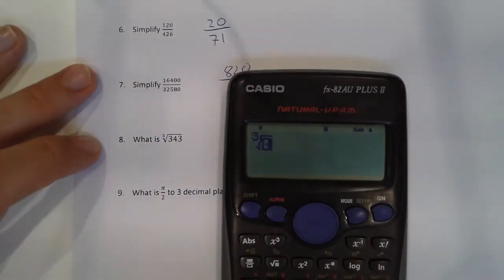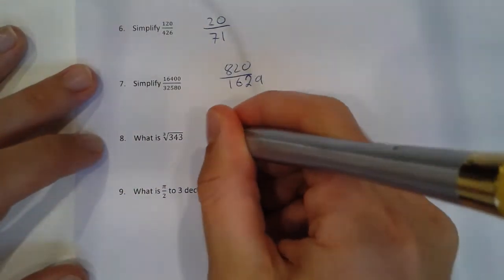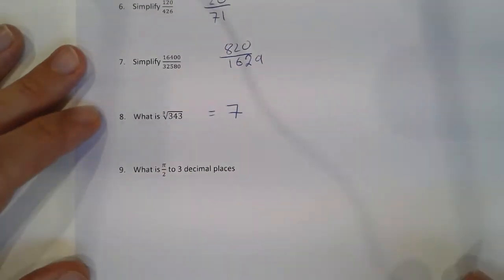Now I type in the 343, it gives me an answer of 7. And the final question we're going to look at,